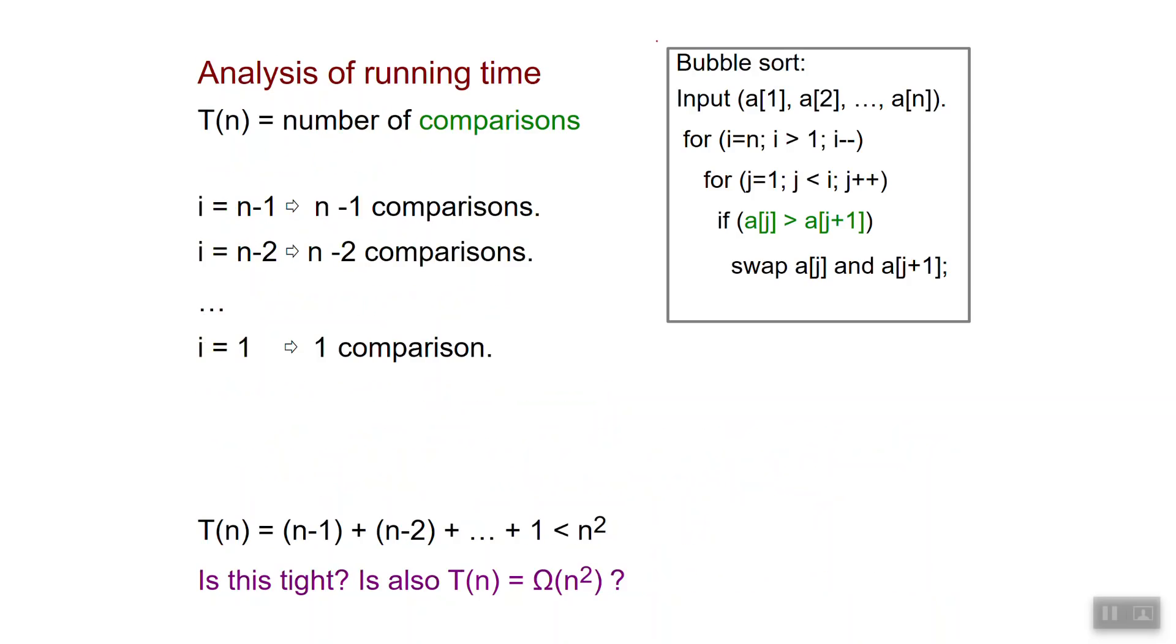Okay, so here is bubble sort. Now we want to understand how efficient this algorithm is. So we can count the number of steps, but it makes more sense now to count the number of comparisons, so that we don't get bogged down in the details of how many steps does a full iteration take and so on. If we count comparisons, just comparisons, we get a cleaner analysis. Okay, so let's start. Let's see what's going on. So when the value of i is equal to n minus 1, then we can see that the inner loop performs n minus 1 comparisons.